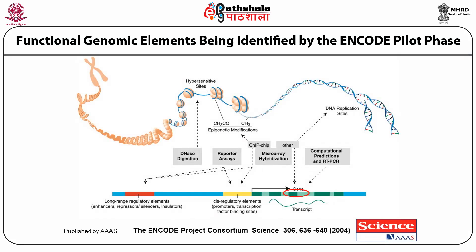Before studying functional genomics, we should understand how gene sequences or genes are located and organized. In the chromosome, DNA is coiled in such a way that it forms a super-coil region, and with the help of histones, you can see how it is organized from chromosome to DNA. There are hypersensitive sites sensitive to DNA digestion, and we can perform reporter assays to know the gene regulatory elements. DNA replication sites and computational prediction of genes can be done using real-time PCR.